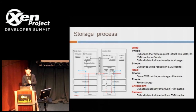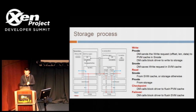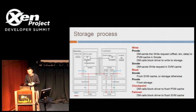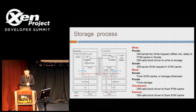For read requests on the secondary node, the request first looks at the cache; if it exists, it is served from cache; otherwise, it reads from storage. On the primary node side, the process doesn't change. On checkpoints, our device manager calls the block driver to flush the primary virtual machine's cache down to storage. On failure, meaning the secondary node will take over, we discard the primary virtual machine's cache and flush the secondary virtual machine's cache.